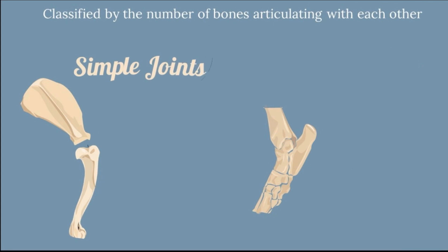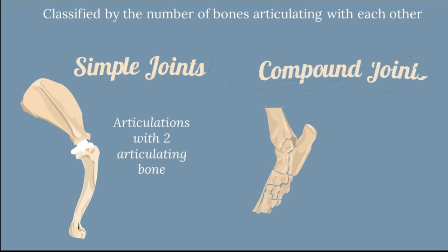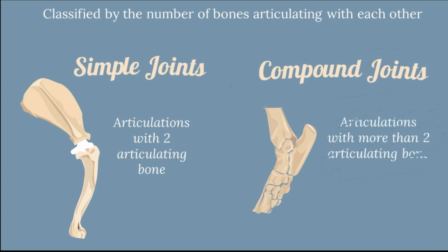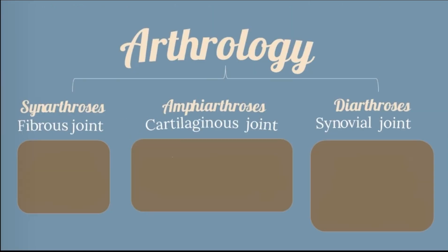The simple joint is an articulation with two articulating bones. In the compound joint, the articulation involves more than two articulating bones. The structural classification of arthrology classifies joints by their uniting medium into fibrous, cartilaginous, and synovial joints.